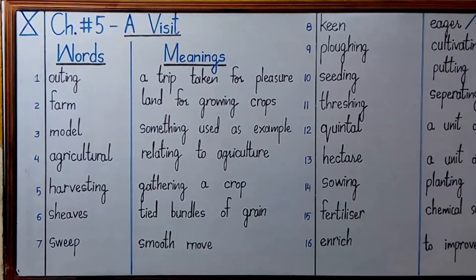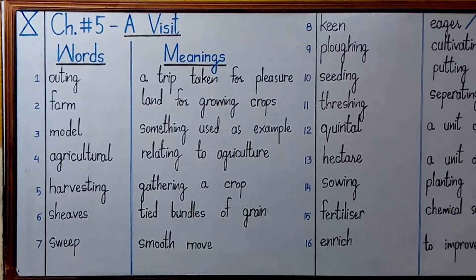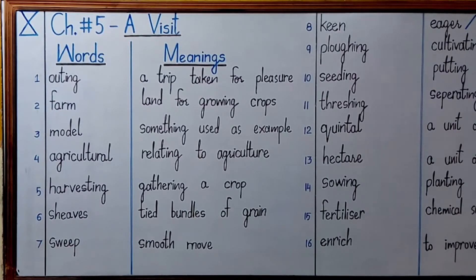Word number two is 'farm'. Farm is an area of land for growing crops and sometimes for rearing animals. There can be a vegetable farm or an animal farm depending upon what activity is taking place there. If crops are being grown on an area of land then that is called a vegetable farm. In general, farm is an area of land for growing crops.